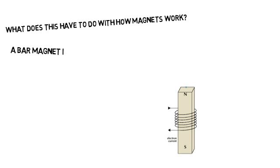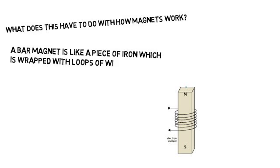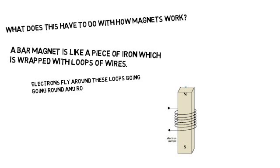So what does this have to do with how magnets work? Well, a bar magnet is like a piece of iron which is wrapped with loops of wires. Electrons fly around these loops going round and round. These moving electrons are similar to the electrons being shot from the back of a TV screen.